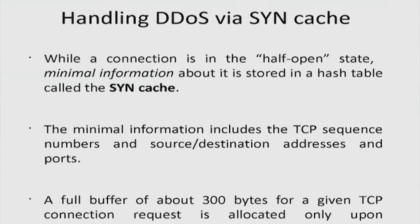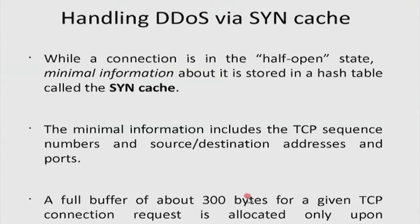In addition to SYN cookies, many operating systems use a SYN cache. While a connection is in the half-open state, minimum information about it — such as TCP sequence numbers, source and destination addresses, and ports — is stored in a hash table called the SYN cache, requiring only about 30 bytes rather than 300 bytes. Only when the initiator is confirmed as an authentic client does the system reserve the full buffer space. This is the idea of a SYN cache, another defense alongside SYN cookies.